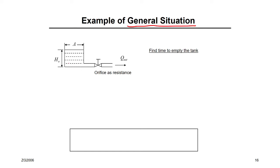What does it mean by a general problem? It's not a steady state — it's changing with time all the time. Starting from T equal to 0, the dynamic system will start. I will show you what's going on.